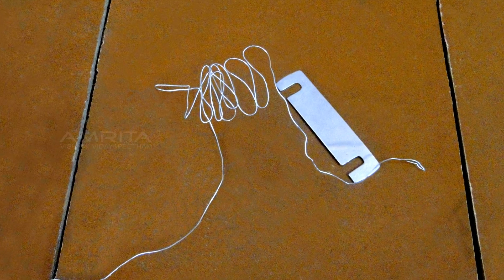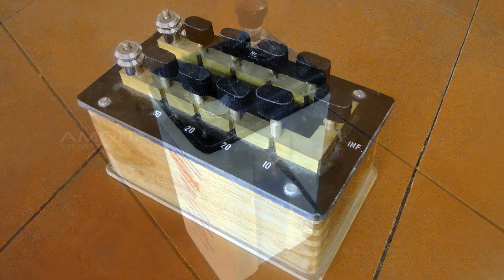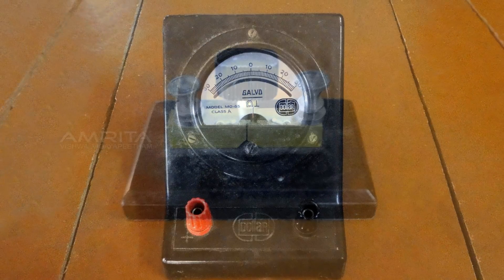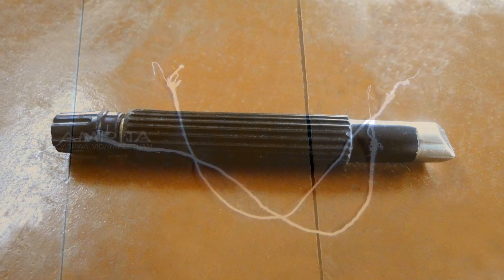Thick copper strip, unknown low resistance, fractional resistance box, lead accumulator, galvanometer, one-way key, connecting wires, jockey.